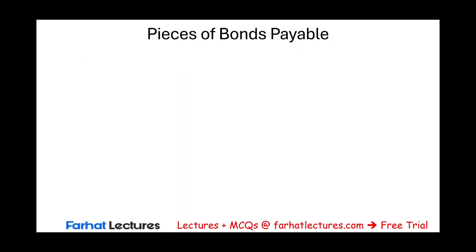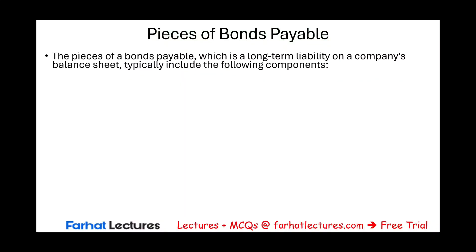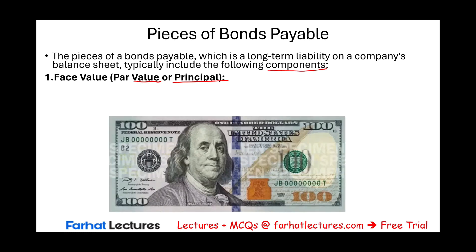Let's take a look at the pieces of bonds payable. Bonds payable is a long-term debt on the balance sheet. The first major component is the face value of the bond, sometimes called the par value or the principal amount — they are the same thing. Just as a $100 bill has $100 printed on it as its face value, a bond has an actual face value printed on it. This is the amount the issuing company agrees to pay to the bondholders at maturity.